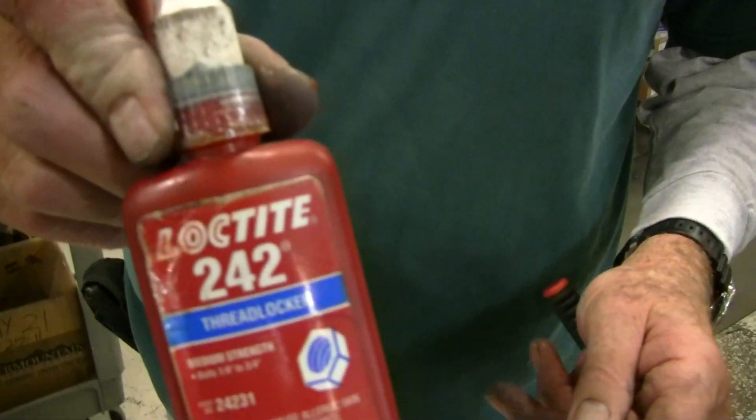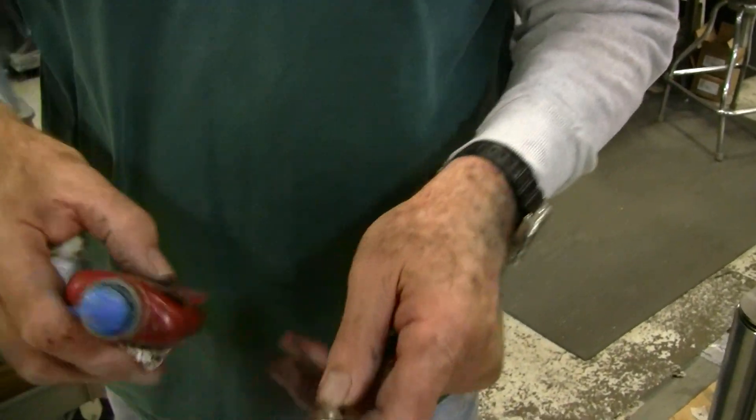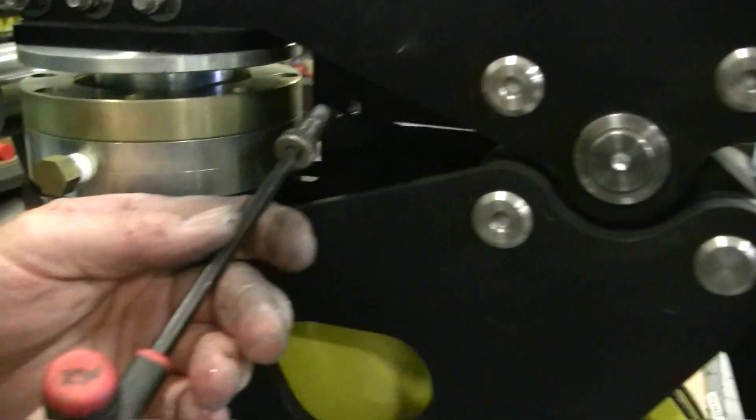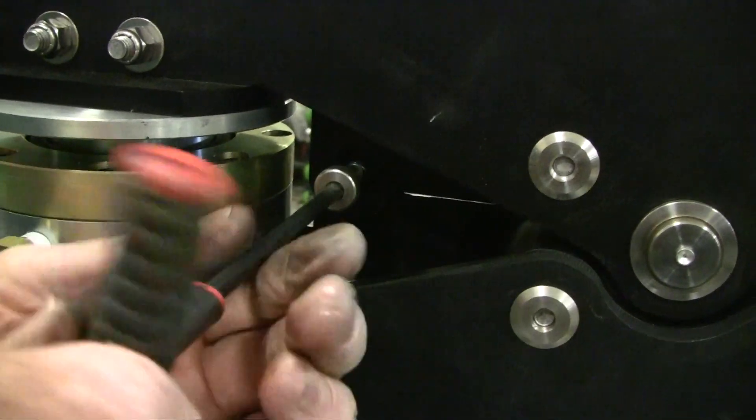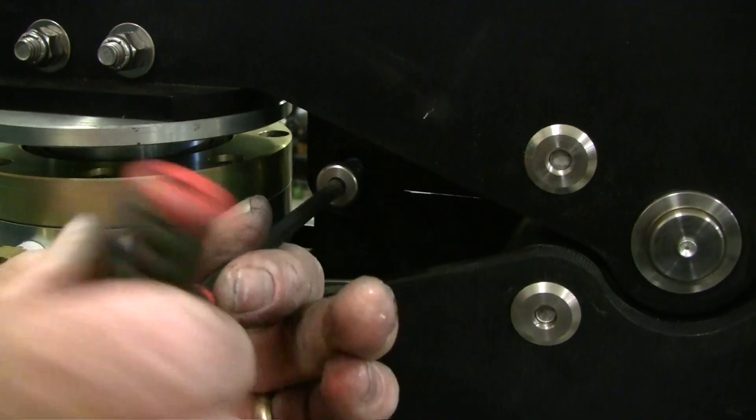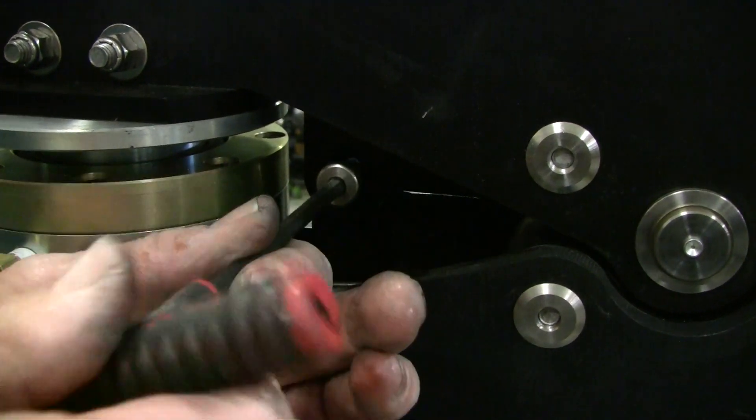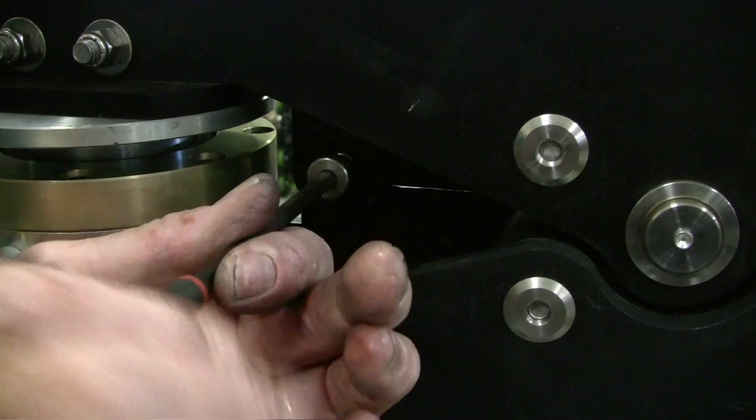Put Loctite or a similar product on the shoulder bolt. Reinstall the shoulder bolt and firmly tighten. The procedure is now completed.